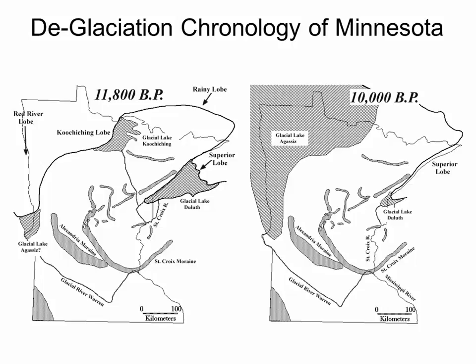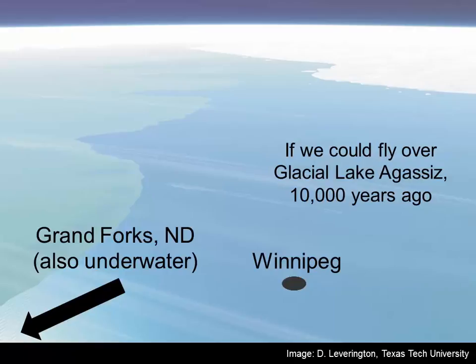The Des Moines lobe continued to retreat, and that water continued to be trapped. We have one of the largest glacial lake beds in the world right here in northwestern Minnesota — Glacial Lake Agassiz. About 10,000 years ago it was at its maximum extent and it was enormous. If we could fly over Glacial Lake Agassiz 10,000 years ago, Winnipeg would have been completely underwater. There's still glaciers to the north melting and contributing more and more water to this glacial lake bed.